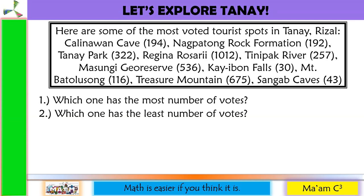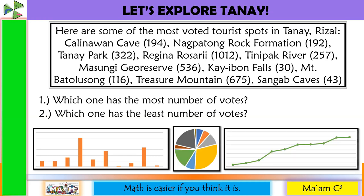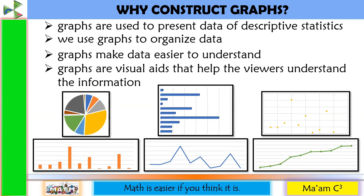It is easier to answer these questions if the data is presented in such a way that the reader can easily visualize and analyze it. That is what we are going to discuss today — presenting data using appropriate graphs. We will discuss three kinds of graphs: bar graph, pie graph, and line graph. Graphs are used to present data of descriptive statistics, to organize data, make data easier to understand, and serve as visual aids that help viewers understand the information.